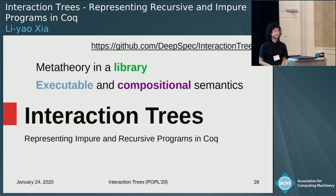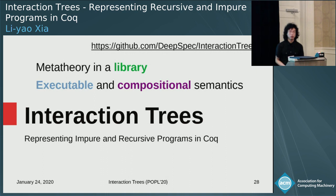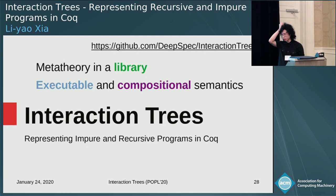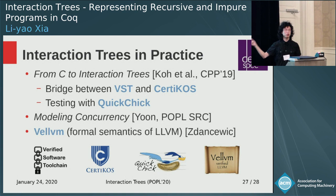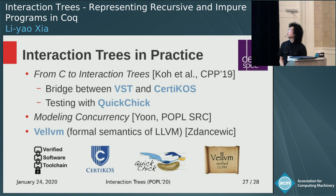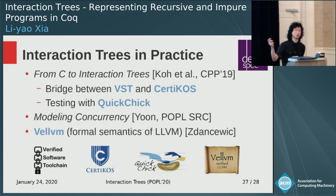Q: Have you done any work on deriving program logics from these interaction trees to verify the imperative programs on one side of your semantics? A: In the previous work about C, we had put interaction trees inside the precondition of your C program. More generally, there is also another line of work connecting interaction trees and finding a Dijkstra monad for interaction trees. We can talk about that offline.